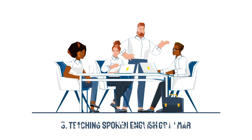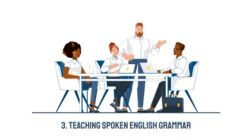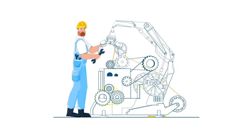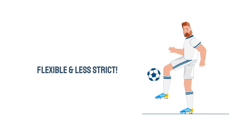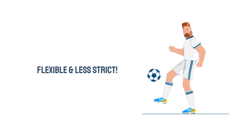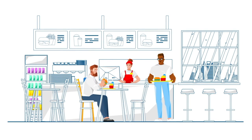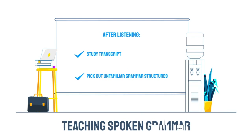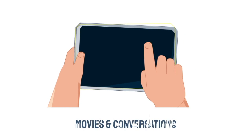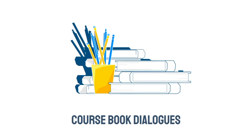Moving on to another level, we have teaching spoken English grammar. In a nutshell, this kind of grammar doesn't follow traditional rules, which makes it extremely flexible and less strict than written grammar. Unlike its written counterpart, spoken grammar is a little bit tricky to explain to students. Therefore, two teaching solutions to resolve this problem have been proposed. In the first solution, students will listen to a conversation between competent speakers, then study transcripts and pick out grammar structures that are unfamiliar with what they have learned. Teachers can also teach spoken grammar through movies or daily conversations such as buying-time language. However, some people believe that the teacher should concentrate on the core language that course book dialogues tend to emphasize, as it is the only way to learn this unique grammar.